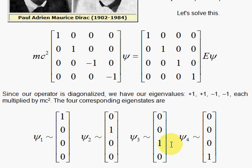Here is where spin comes from, which you may have learned about in chemistry many semesters ago or in high school. This gives us where the two-value nature of the electron — spin up and spin down — comes from. A triumph of theoretical physics.